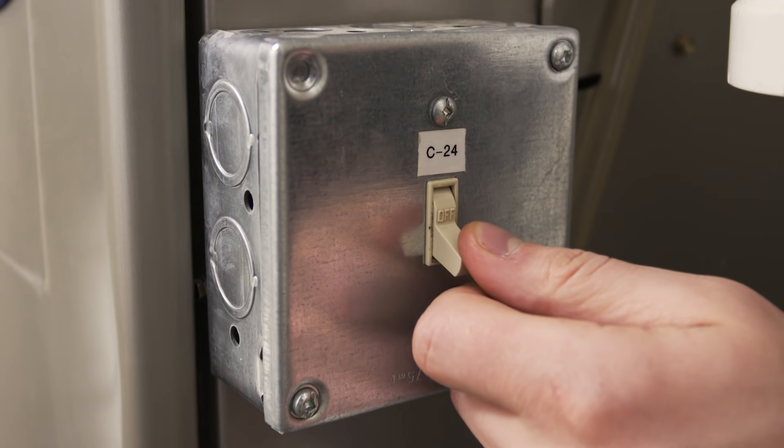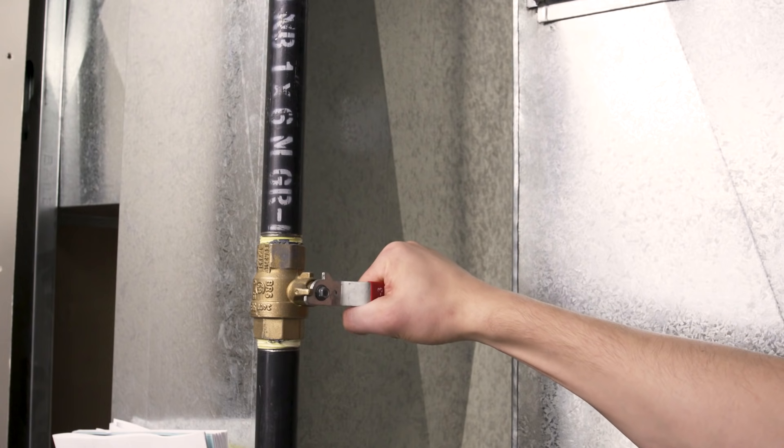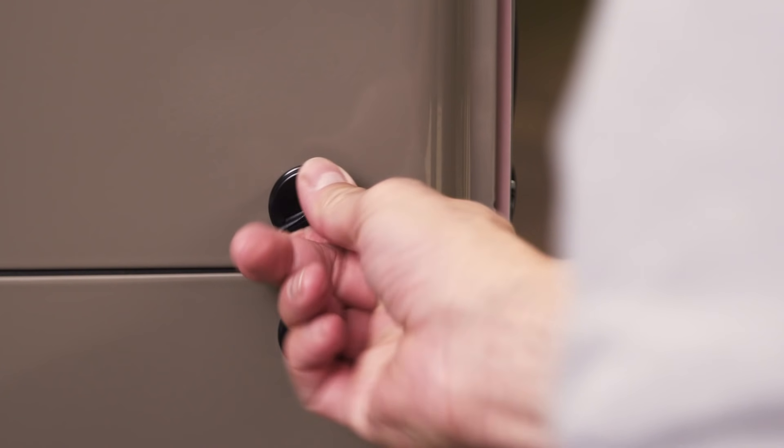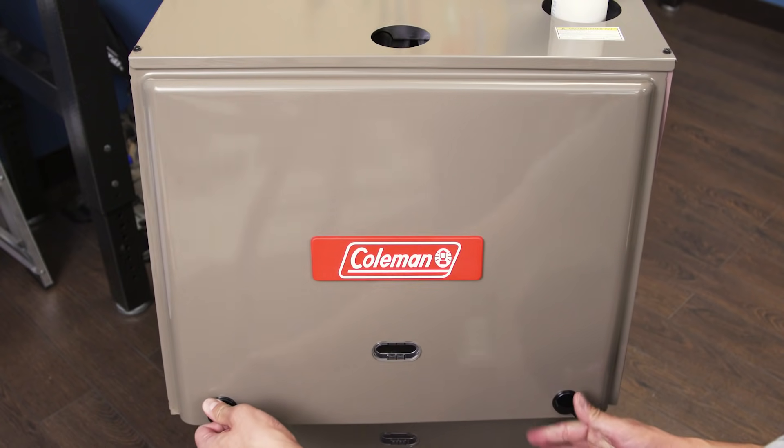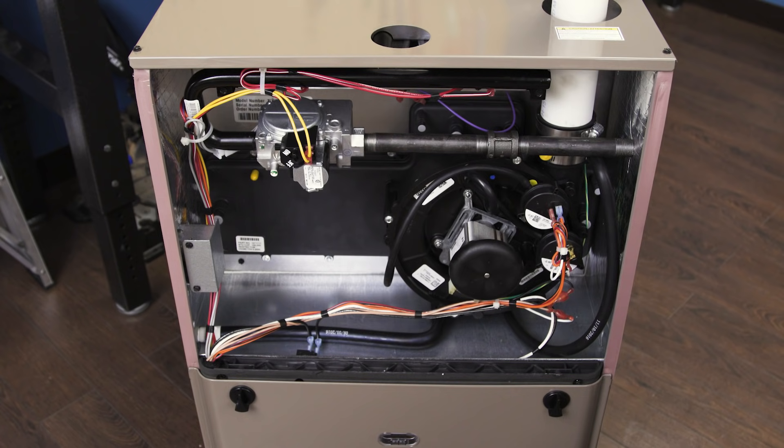When working on your furnace always shut off the power and close the gas valve. Remove the top cover panel. Many furnaces use a push lock or twist lock, but some furnaces will require a screwdriver or a socket wrench.